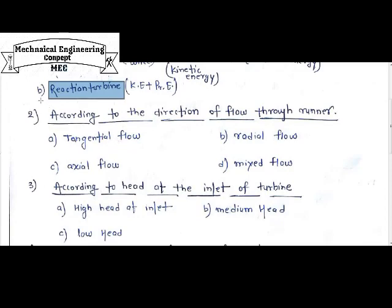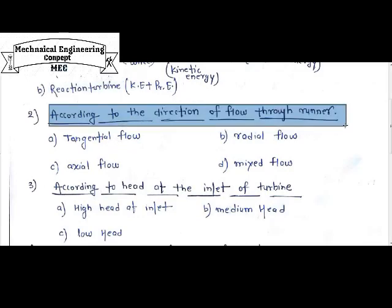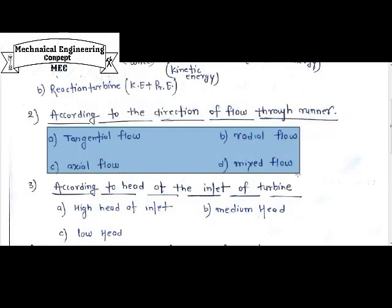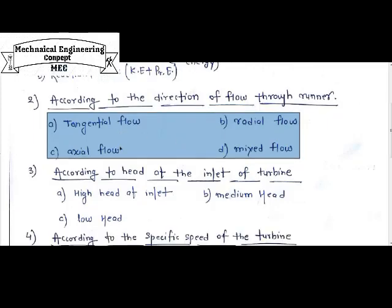The second classification is according to the direction of flow through the runner. On the basis of flow direction, we can categorize the turbine into four basic types: tangential flow turbine, radial flow turbine, axial flow turbine, and mixed flow turbine.